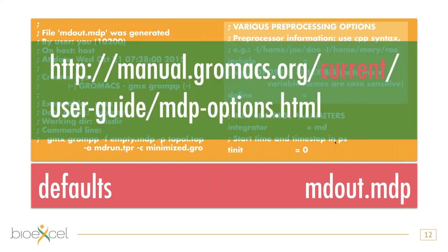One of the things I want to hint you to — and this is just the easiest advice I can give you always — is reading the manual. You find this under manual.gromacs.org, current user guide, MDP options. If you replace 'current' with the GROMACS version you're using, you also get the manual for that version. We always urge you to use the most current stable version of GROMACS, and that's exactly where you get an overview of all the MDP options available with some explanatory text.